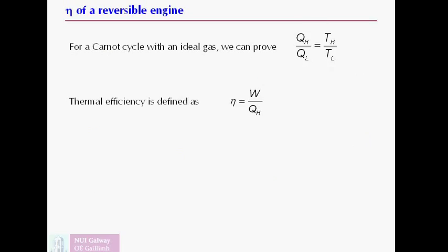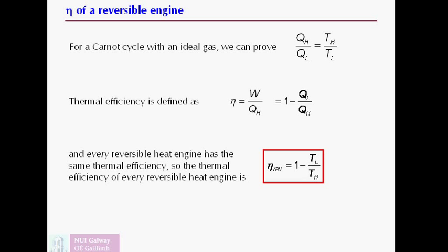But what Carnot proved from this was that for this particular reversible process, a very simple, very memorable equation holds true. QH over QL equals TH over TL. And since the efficiency is work over QH, we can expand that out. We know that work is QH minus QL and so on. So we find the efficiency of a reversible engine is 1 minus TL over TH. It's a couple of lines of algebra. That's the efficiency of the Carnot cycle.